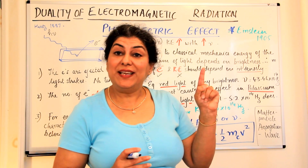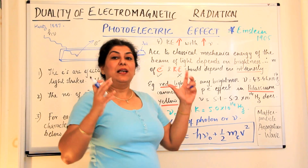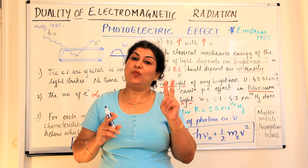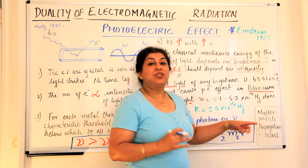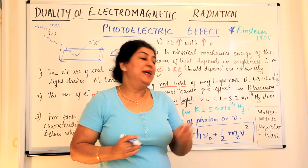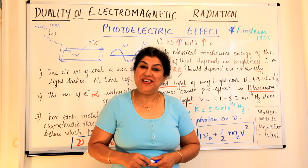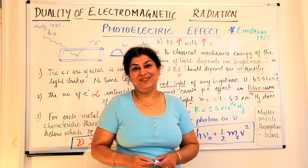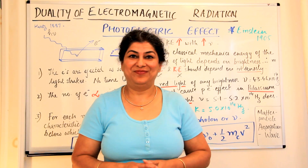What depends on intensity is the number of photoelectrons ejected. It was concluded that electromagnetic radiations or light have two properties — wave-like and particle-like. When light reacts with matter it displays particle-like behavior, but when it is being propagated in vacuum or in any medium it acts as a wave. This proved the dual nature of electromagnetic radiation. Please feel free to post any questions in the comments below.